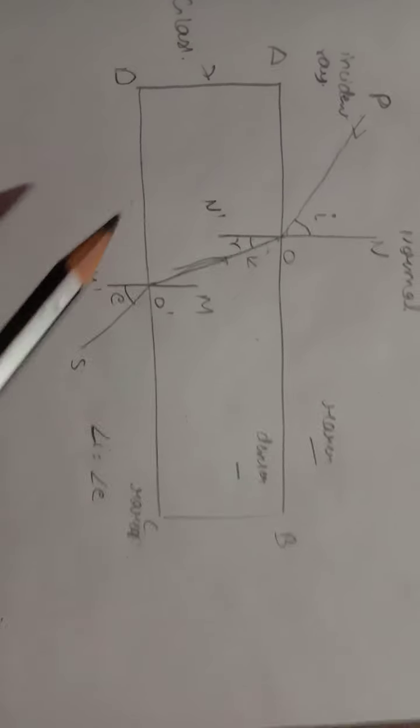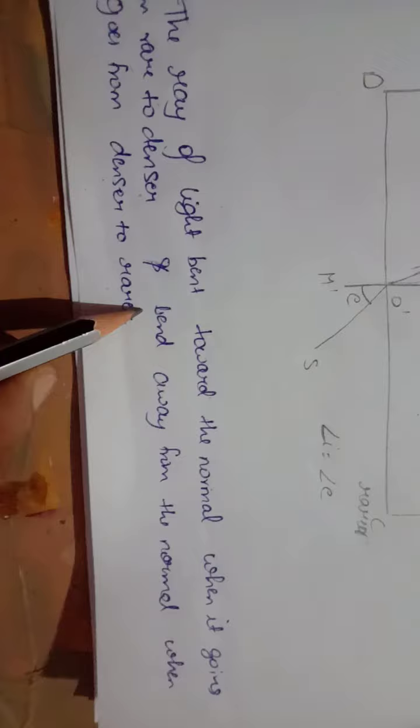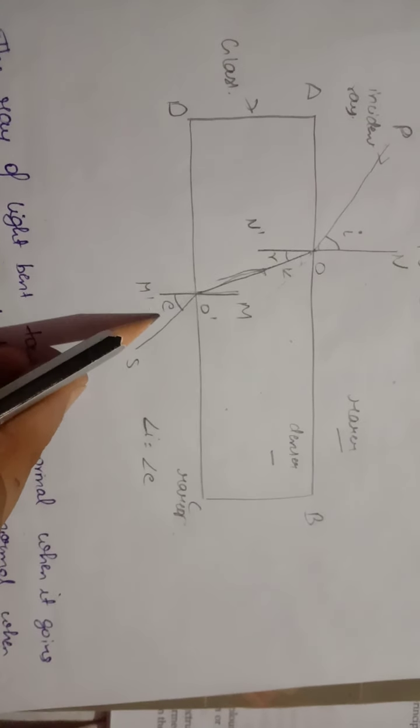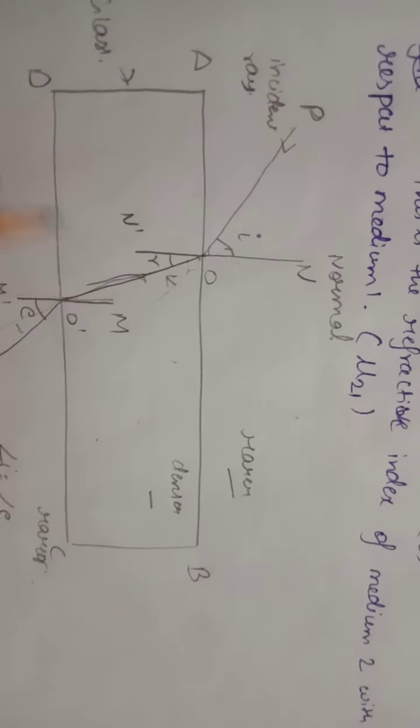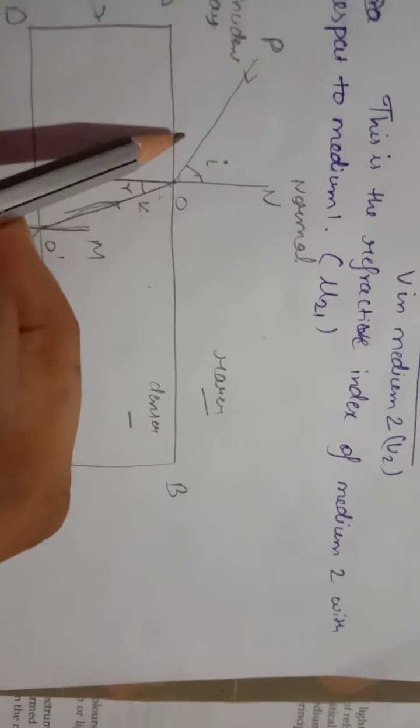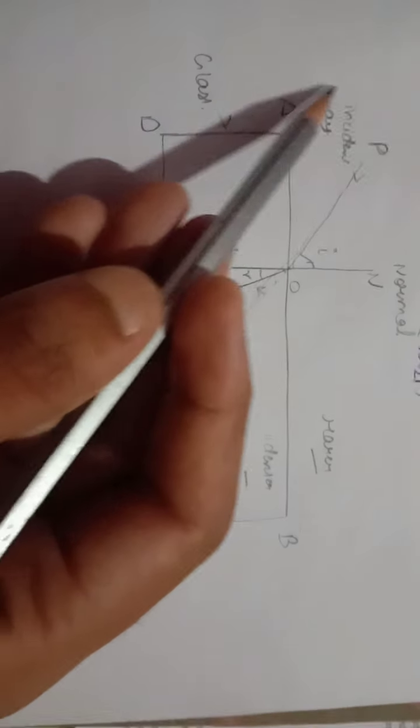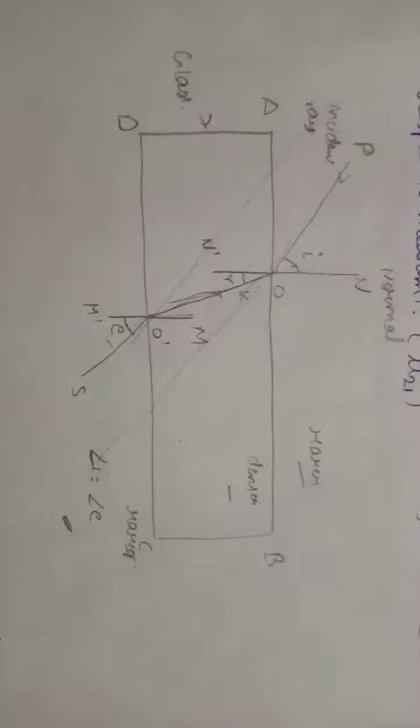And when going from denser to rare, it bends away from the normal. This is the angle of incidence, angle of refraction, and the angle of emergence from the glass.